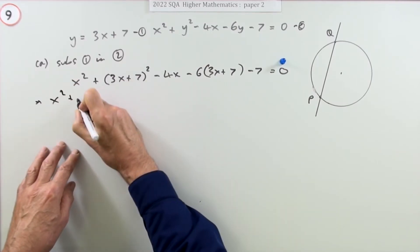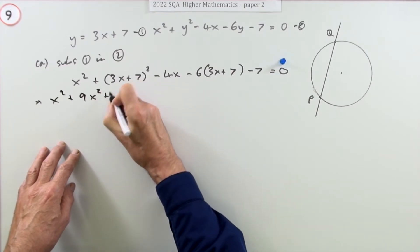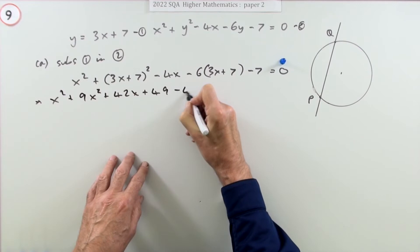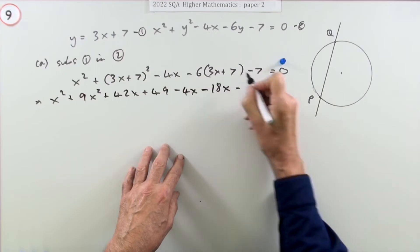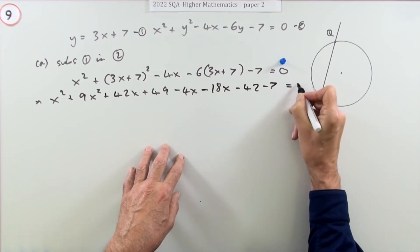So multiplying it all out. x squared's fine. Square a bracket, so it's going to be square the first, 9x squared. Twice the product, that's 21, 42x. Square the last, that's 49. That doesn't need anything. Multiply this out. 6, 3's are 18. 6, 7's are 42. So it's minus 42 minus 7 equals 0.